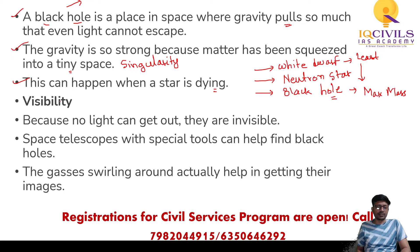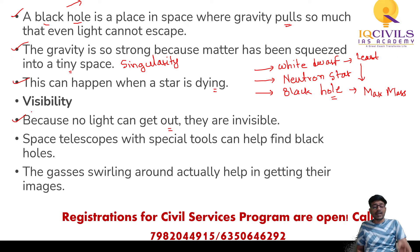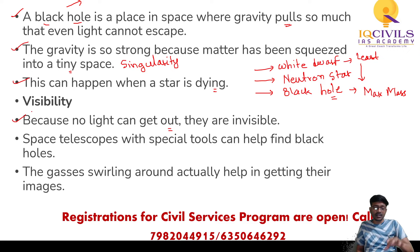Black holes are invisible because no light can get out — that's why we call them black holes. We find black holes by studying the accretion disk around them. Space telescopes with special tools can help find black holes by imaging the gases swirling around them. The supermassive black hole at the center of the Milky Way galaxy is Sagittarius A*.